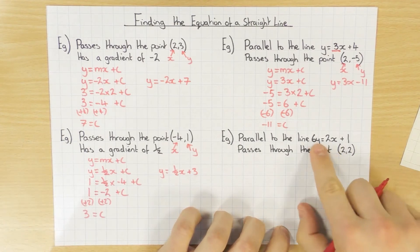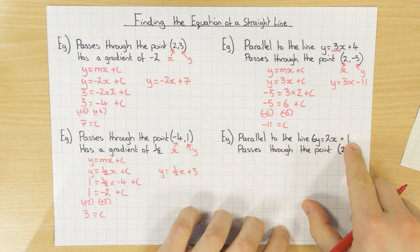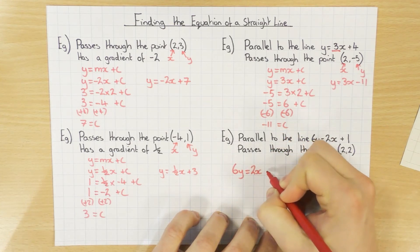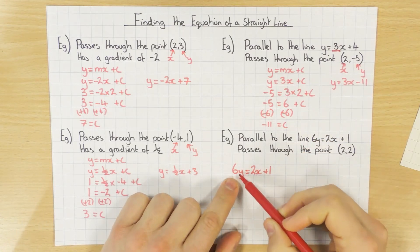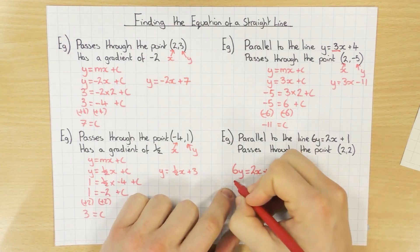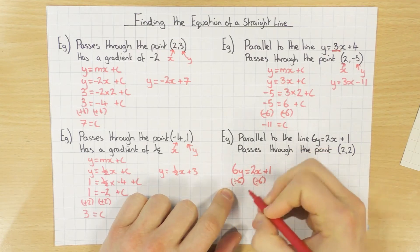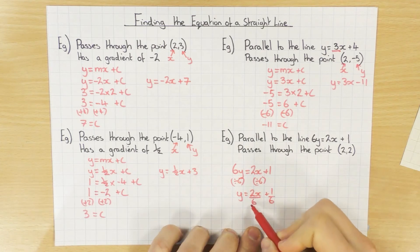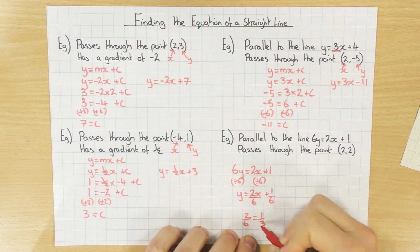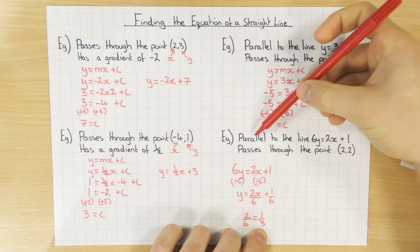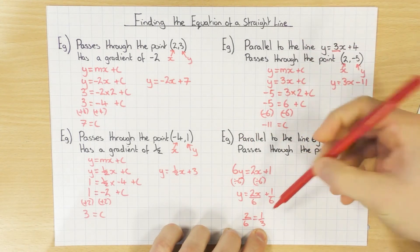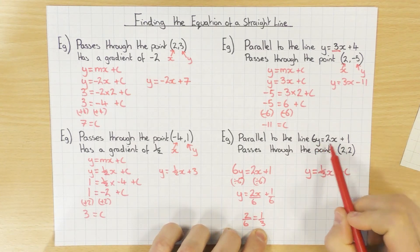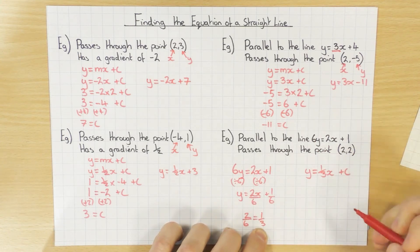This one is similar. However, you might notice that the line is given as 6y equals 2x plus 1. In this case the gradient is not 2. We need to rearrange this to make sure y is on its own. To get y on its own, I divide everything by 6, which gives y equals 2x over 6 plus 1 over 6. The gradient is now 2 sixths, which simplifies to 1 third. So if I want a parallel line, the gradient has to be the same — 1 third. So let's put that in: y equals ⅓x plus c.